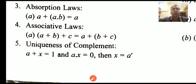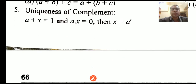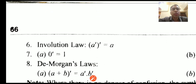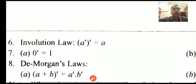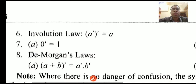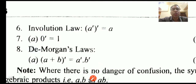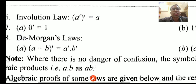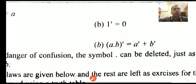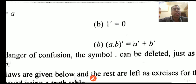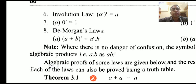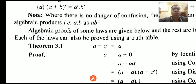The complement law states that if a plus x is equal to 1 and a dot x is equal to 0, then x is the complement of a. The involution law states that the negation of a, if negated again, will give you a as a result. Then De Morgan's laws: (a plus b)' is equal to a' dot b', and (a dot b)' is equal to a' plus b'. These are the main theorems.